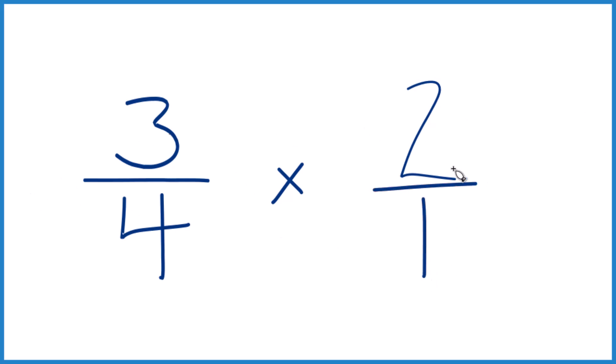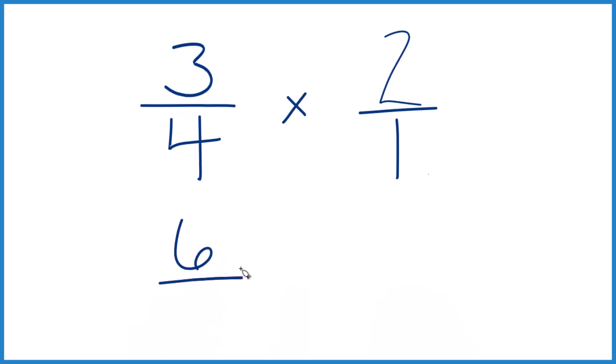But now, when we're multiplying fractions, we multiply the numerators, then the denominators, so it lines up real nice. Three times two, that's six. Four times one is four, and we have six-fourths.